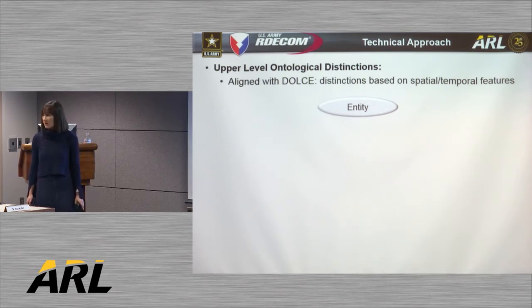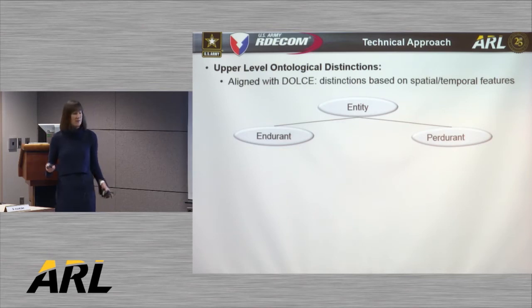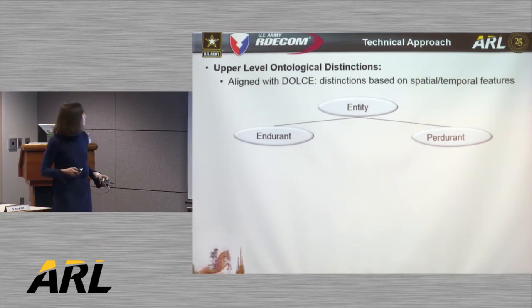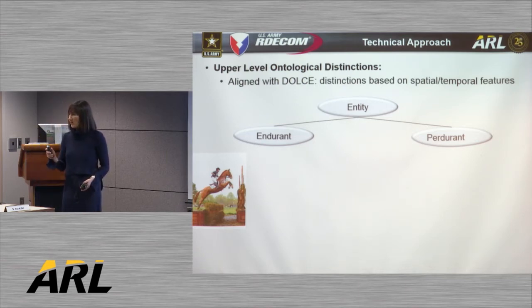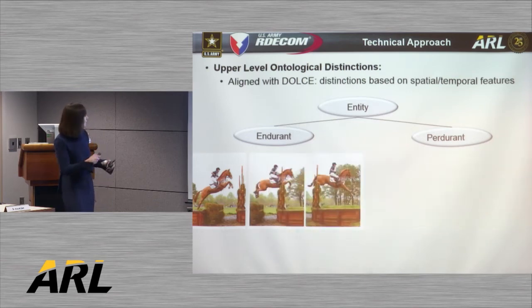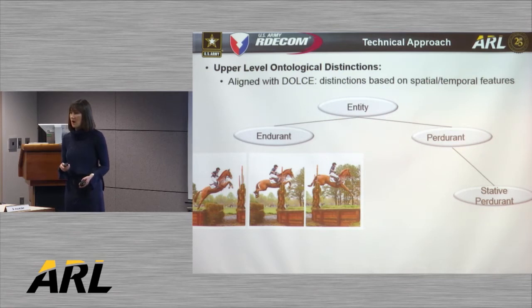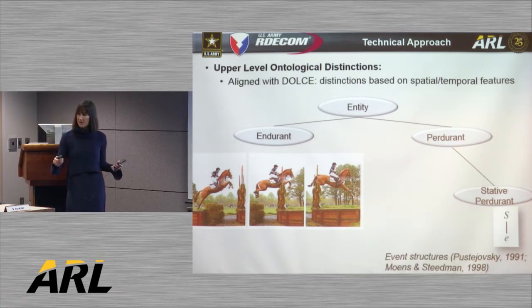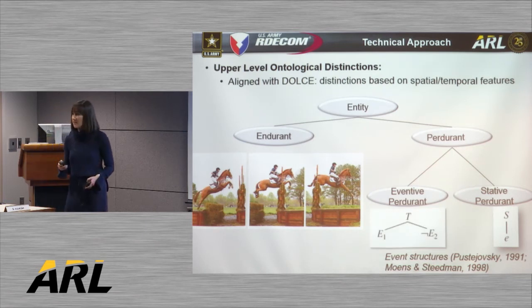The very upper level of RIO aligns with the Descriptive Ontology for Linguistic and Cognitive Engineering, Dolce. Like Dolce, our root node of entity splits into endurant and perdurant. Endurants are entities for which, at any given snapshot of time, we can understand that entity as a complete concept — for example, a horse and a rider. Perdurants are entities for which we can only understand a part given a single snapshot in time — for example, the sequence of a horse jumping over a fence. In our ontology, perdurants then split into stative perdurants, like love and know, which are a single homogenous event throughout their subperiods, and eventive perdurants, which are a series of events or states and transitions between them — for example, the event of closing a door.